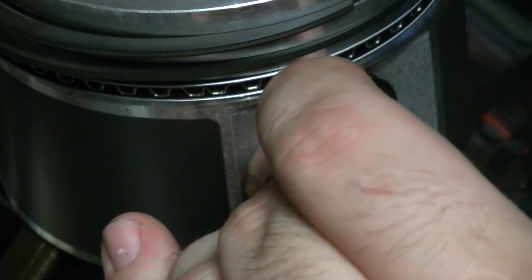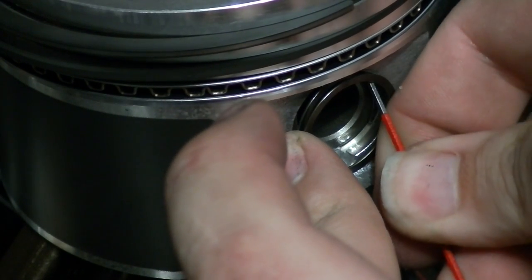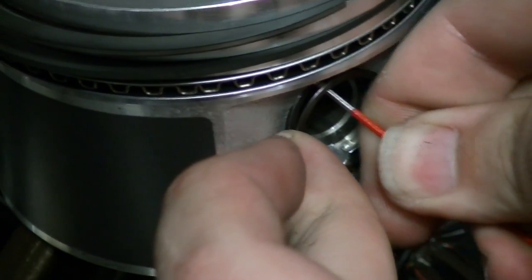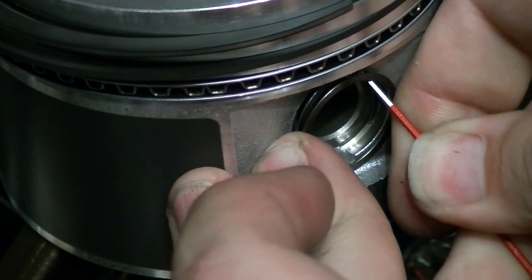Once you've done that, take a little allen head, and you just want to work your way around, pushing the spiral lock into its channel.